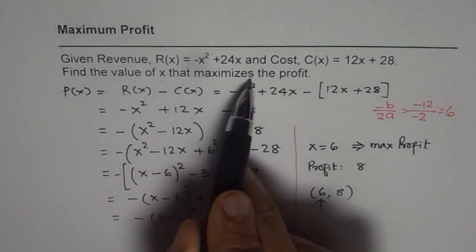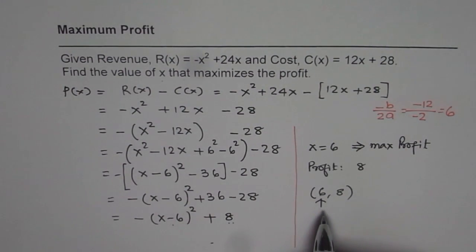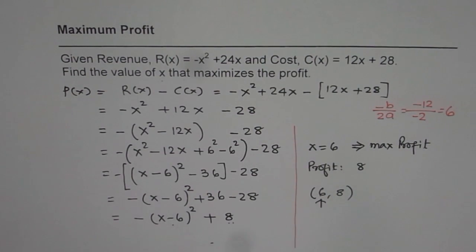Find the value of x that maximizes the profit. The value of x is 6 that maximizes profit. Or you could use -b/2a to find the value of x straight away, especially when you are doing multiple choice questions. I hope that helps. Thank you and all the best.